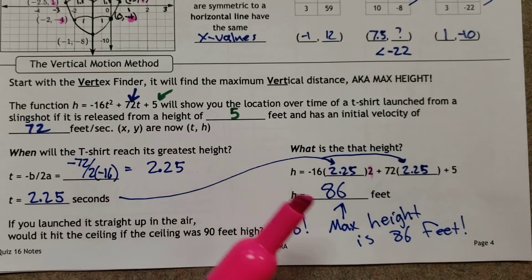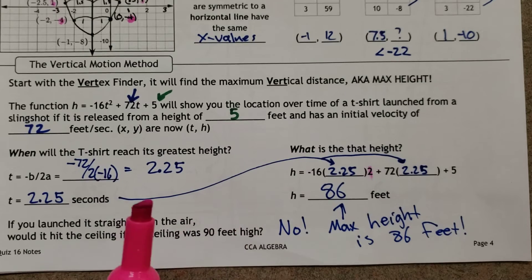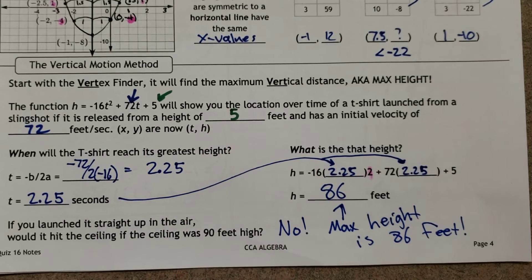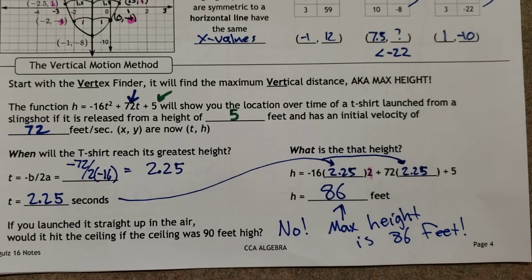If you go to Desmos and you actually graph this, you can figure out when it hits the ground. When it hits the ground, it's pretty obvious - it goes up, it goes down. When it hits the ground is when it hits zero.